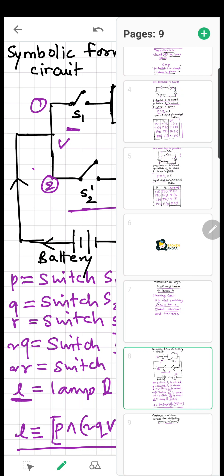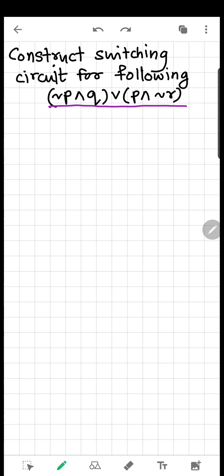Now let's go to the next question. Here you are supposed to construct the circuit for the statement NOT P and Q or P and NOT R.